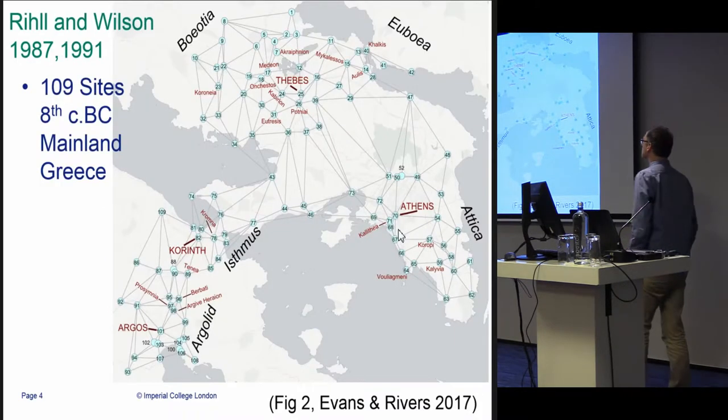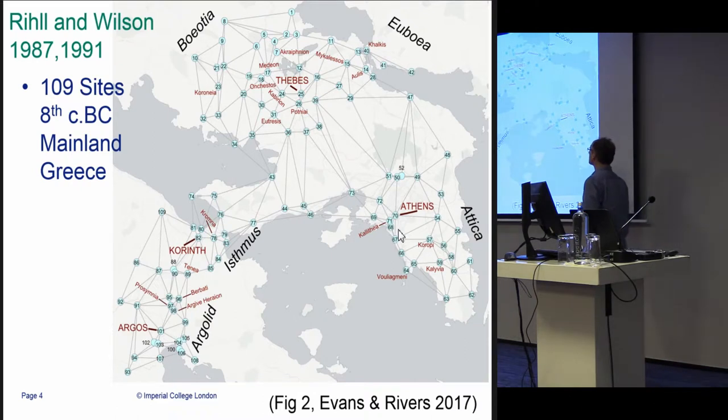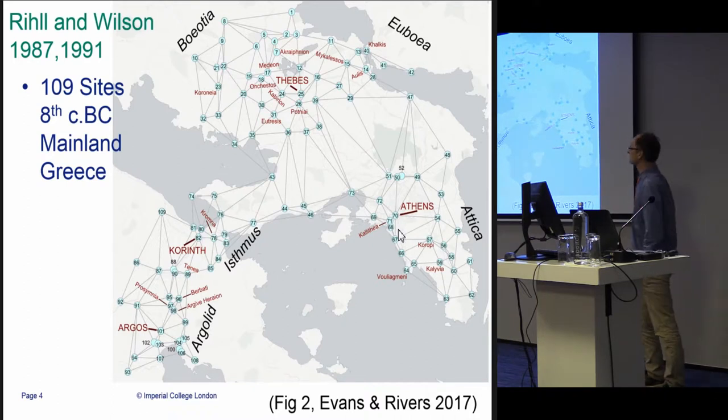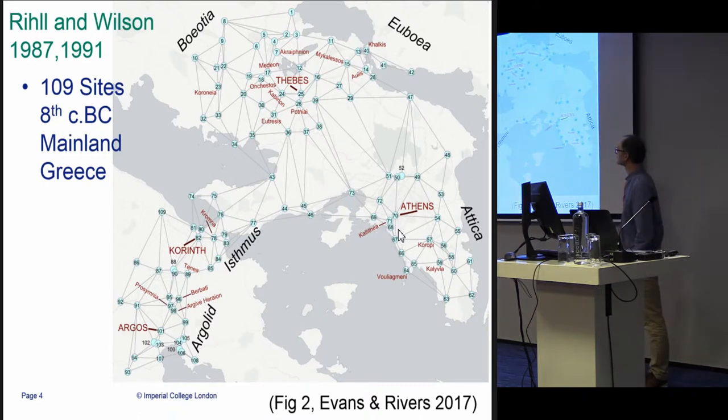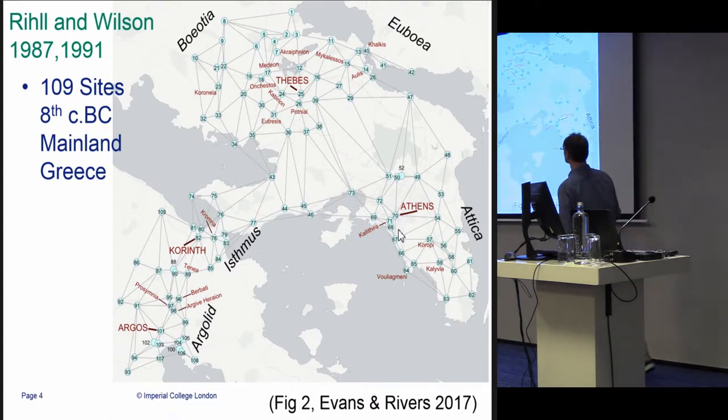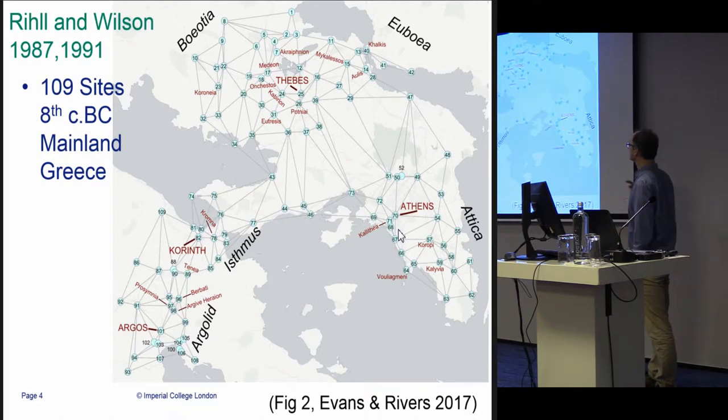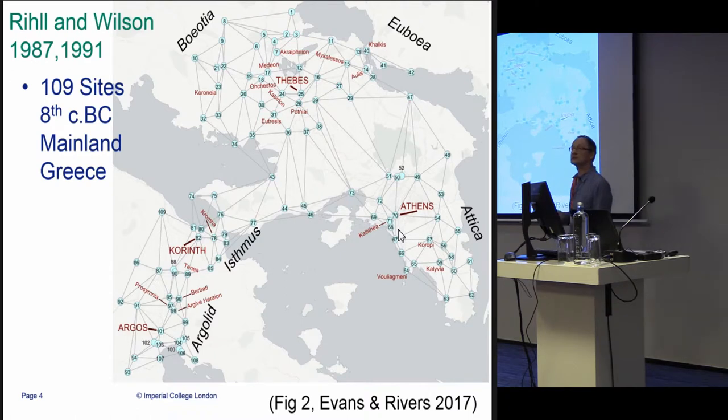What is the area we're looking at? Well, this is the study of Rihil and Wilson from 1987 and 1991. They focused on 109 sites from around about 8th century BC in central Greece. Of course, what they're looking at is all of these sites treated as relatively identical or all equally likely centers for future development. Their question was to try and identify which sites would emerge, surely because of geography, in the long run as the dominant sites in their region.